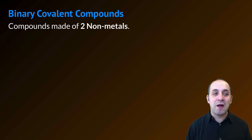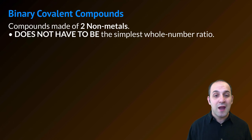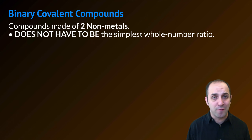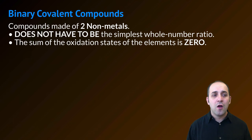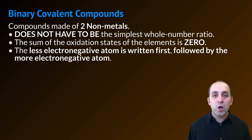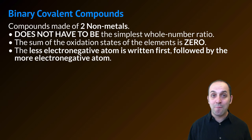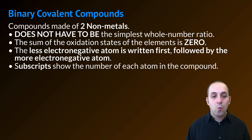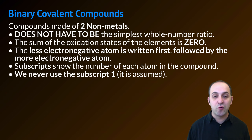Binary covalent compounds are compounds made out of two non-metals — that's what makes them covalent. It does not have to be the simplest whole number ratio, so that's different from ionic compounds. The sum of the oxidation states of the elements in the compound does have to add up to zero. We put the less electronegative atom first, followed by the more electronegative atom. We use subscripts to show the number of atoms in each compound, and we never use the subscript one — it's assumed to be there.